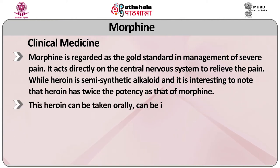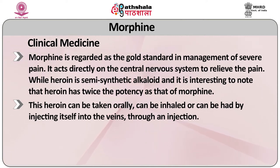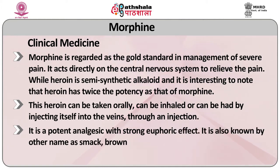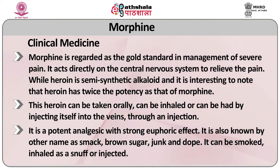Heroin can be taken orally, inhaled, or injected into a vein. It is a potent analgesic with strong euphoric effects. It is also known by other names such as smack, brown sugar, junk, or dough. It can also be smoked, inhaled, snuffed, or injected. Among all addictive drugs, it is the most dangerous. Forensically, it is very important to examine the presence of such alkaloids.